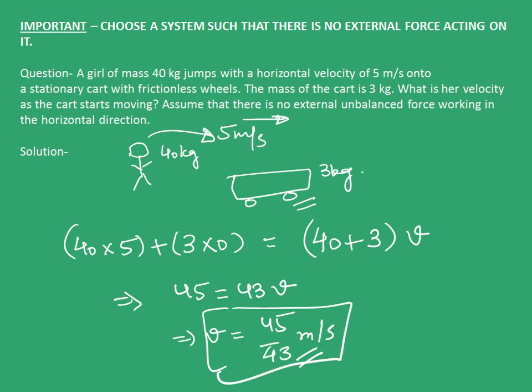The important point to understand is, suppose we considered only the girl to be our system. In that case, when we apply law of conservation of momentum on the girl, we won't get the correct answer. Why? Because there is a force acting on the girl by the cart. This is an external force on the girl.